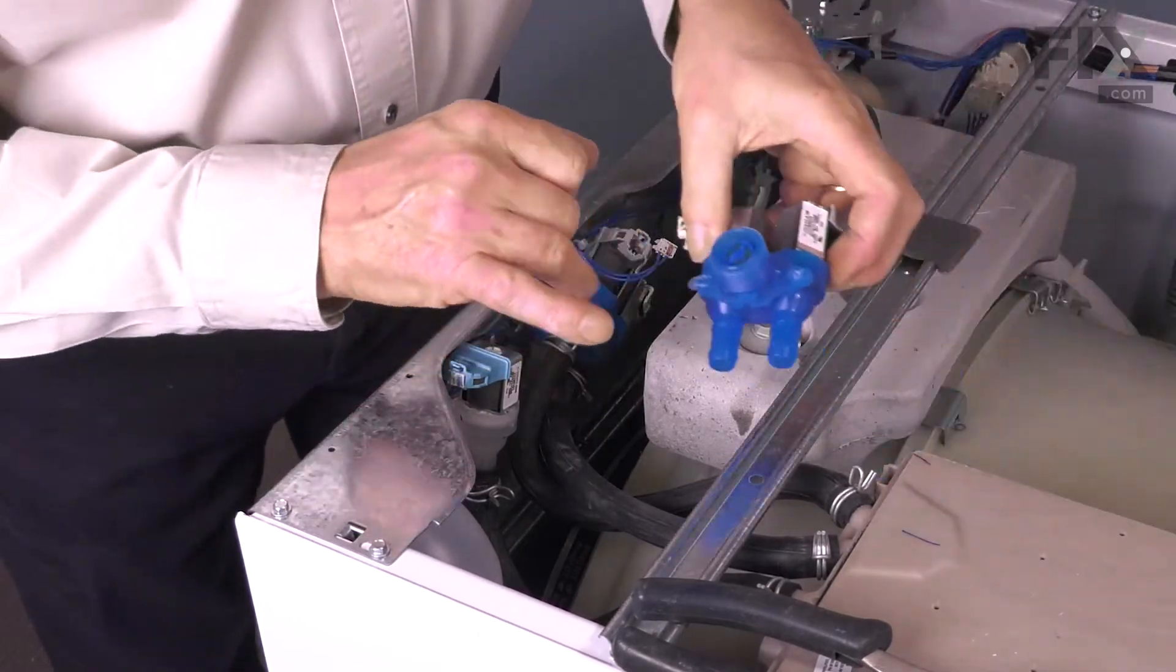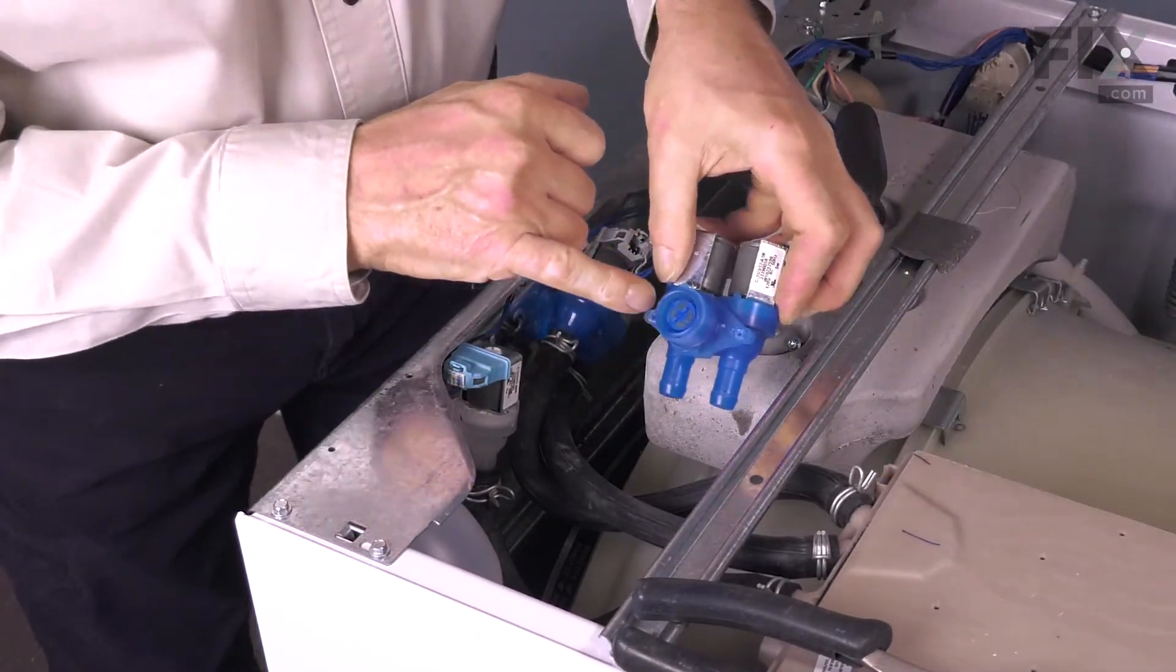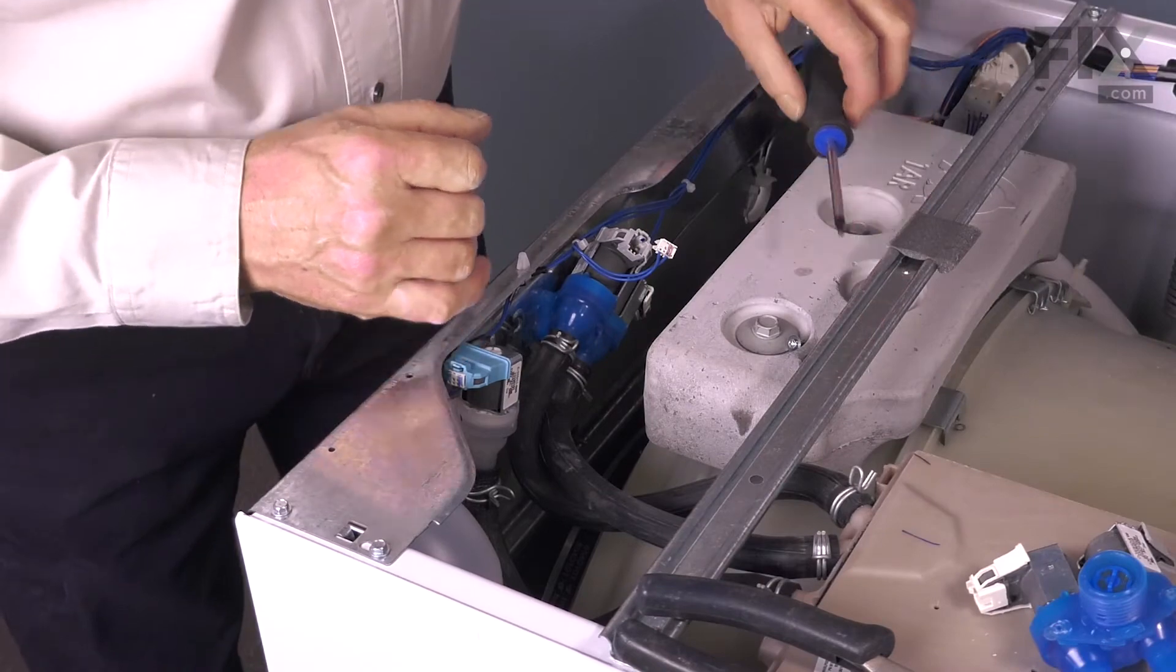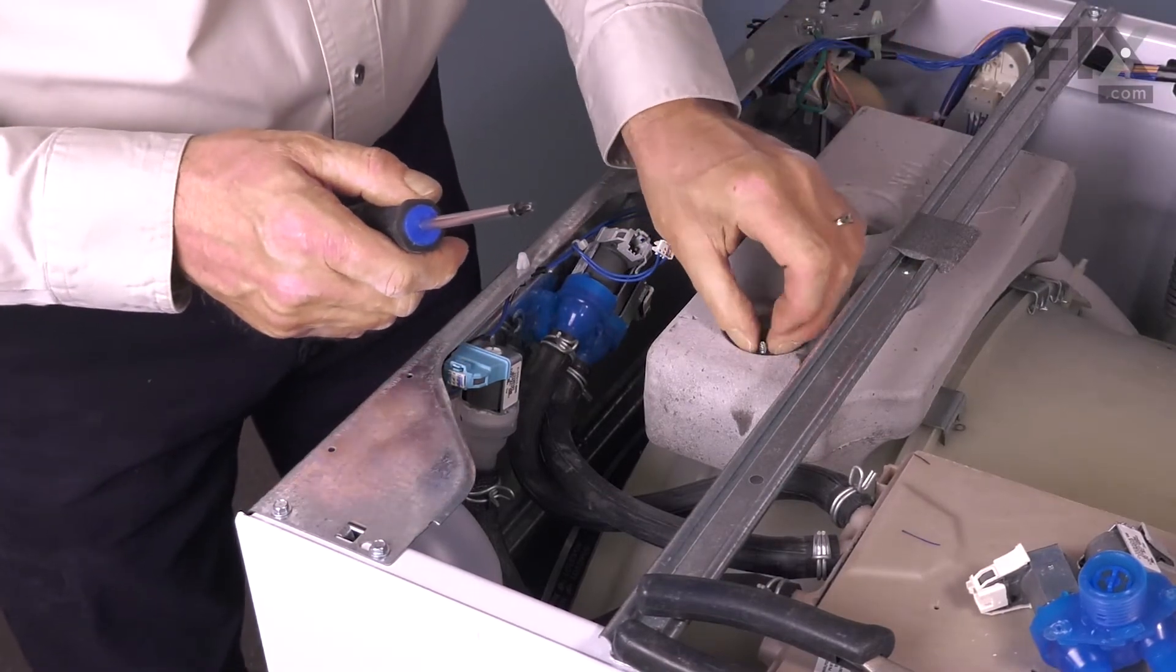Once we've turned it far enough, the two tabs will line up with the openings. We'll reinstall the retaining screw in one of them.